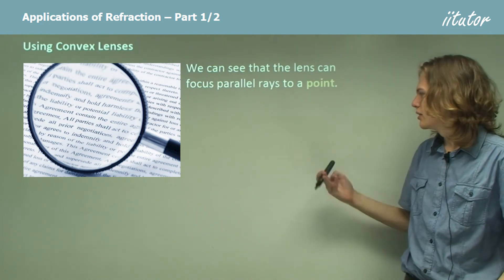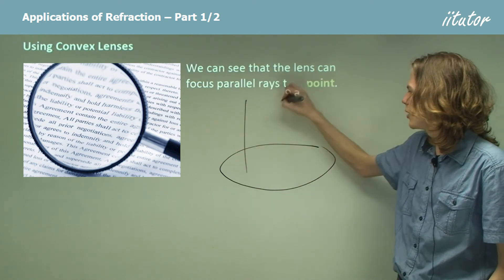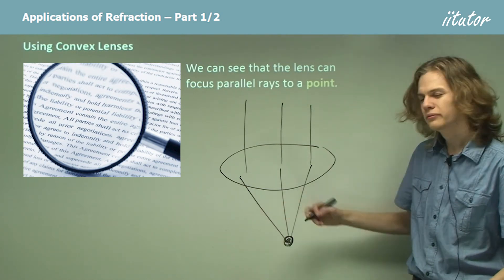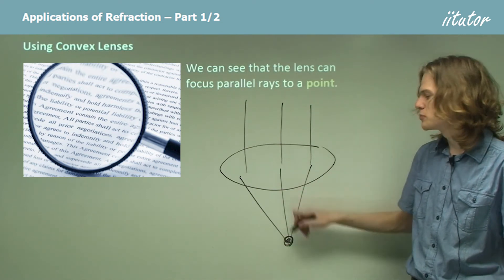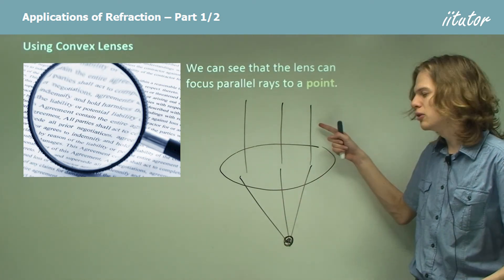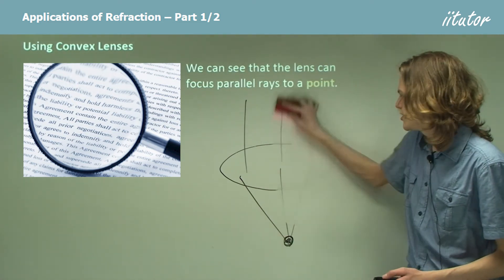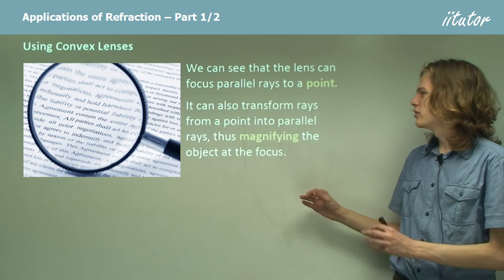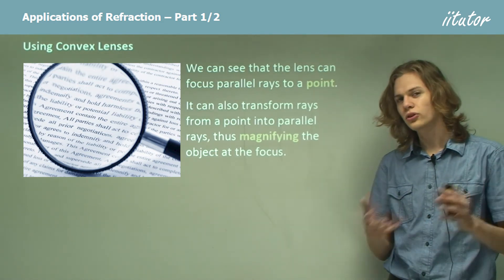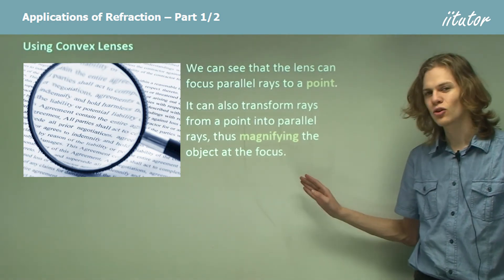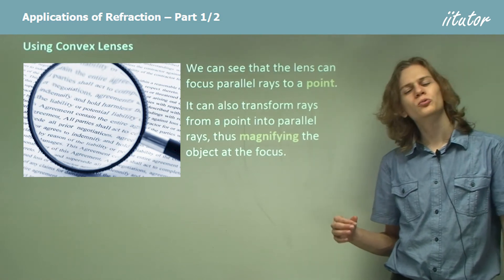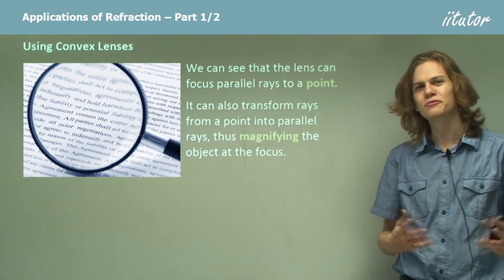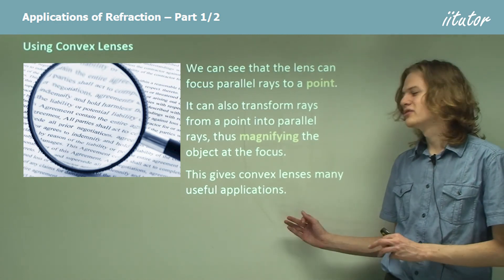So what happens if instead of having a convex lens focusing parallel rays to a point, we have a convex lens near a source of light that is a point? In this case, the rays will spread out and then get turned into parallel rays as they go through the lens. Effectively, this means that the object at the focus seems a lot bigger. So it can take a source of light at a point, or even closer to the lens than the focus point, and it will magnify that object. As long as the object is between the focus of the lens and the lens itself, it will become magnified. This can be useful for, for example, reading fine print.